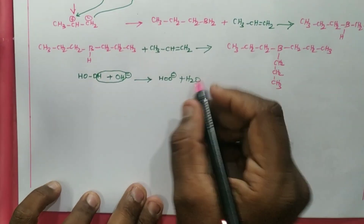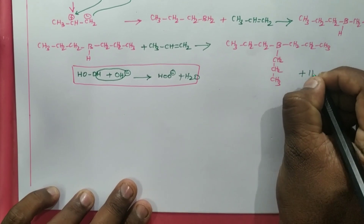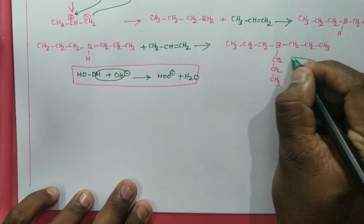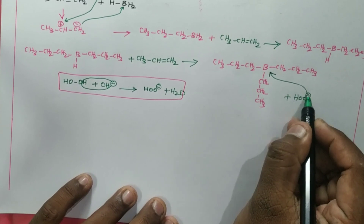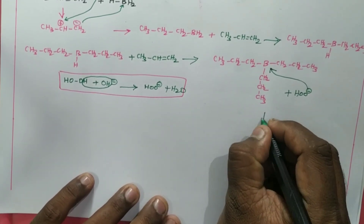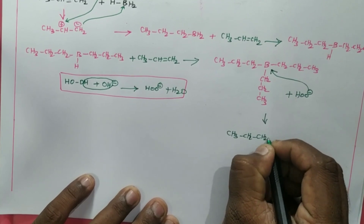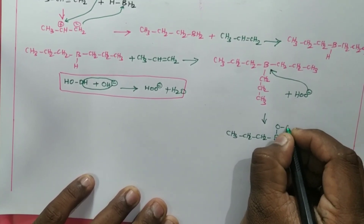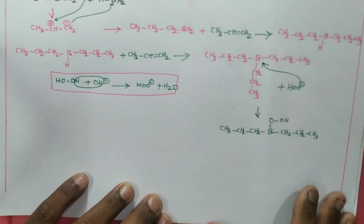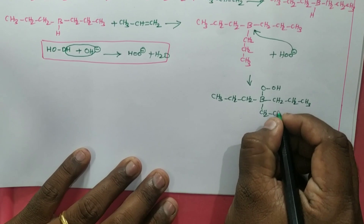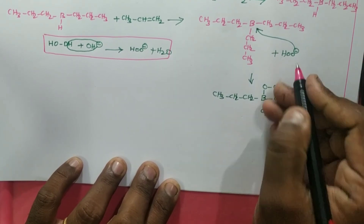The HOO⁻ that is formed now goes and attacks boron. Why does it attack boron? Because boron is electron-deficient, so HOO⁻ attacks the electropositive region. What is formed is: CH3-CH2-CH2-CH2 on boron, with OH⁻ getting attached along with the CH2-CH2-CH3 group. Then the OH⁻ will leave.